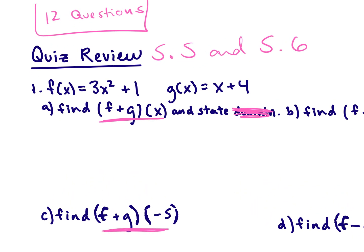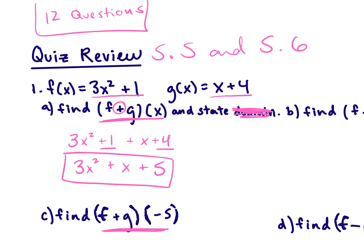Let's look at part a. We have to find f plus g of x. F plus g means we add our two functions together — we take function f and function g and add them. So 3x squared plus 1, plus x plus 4. We combine like terms to get 3x squared plus x plus 5, because we can combine the 1 and the 4. So this is f plus g of x.